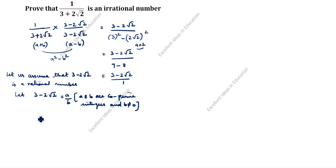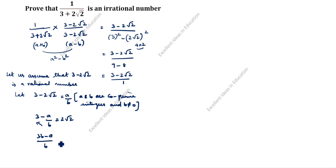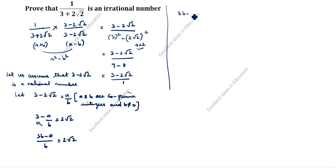Next, rearranging: 3 minus a by b equals 2 root 2. Bringing a by b to one side and keeping 2 on the other side, we get 3b minus a divided by 2b equals root 2.